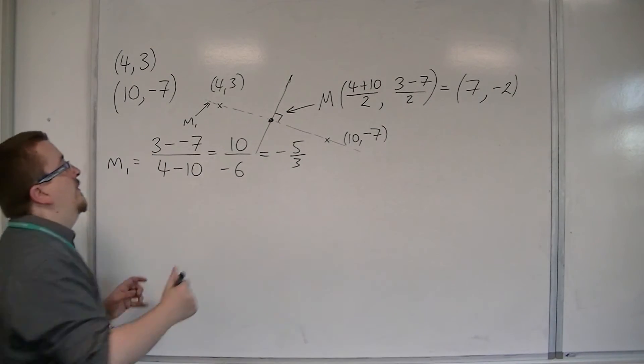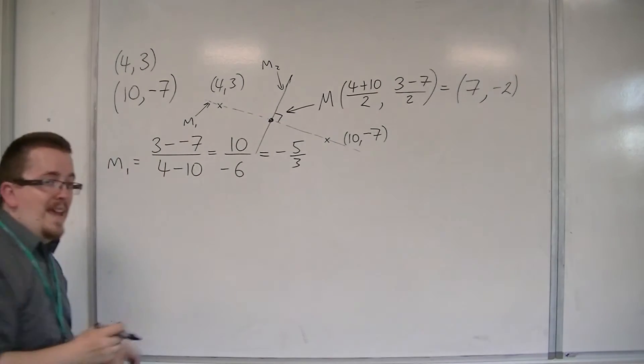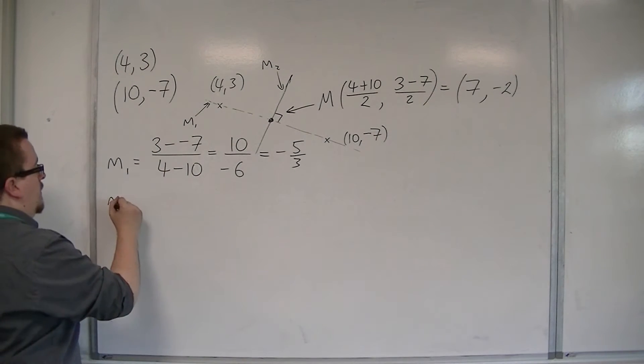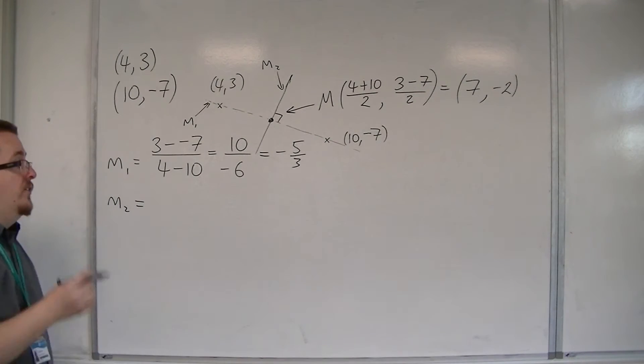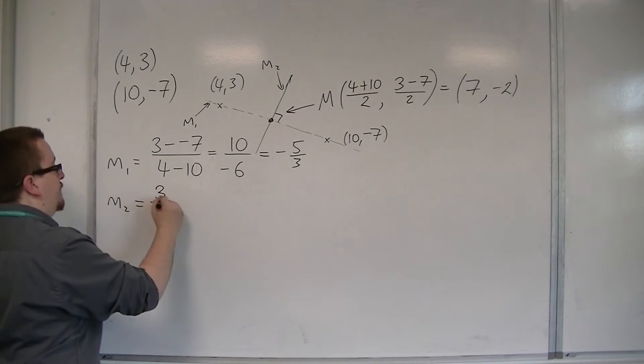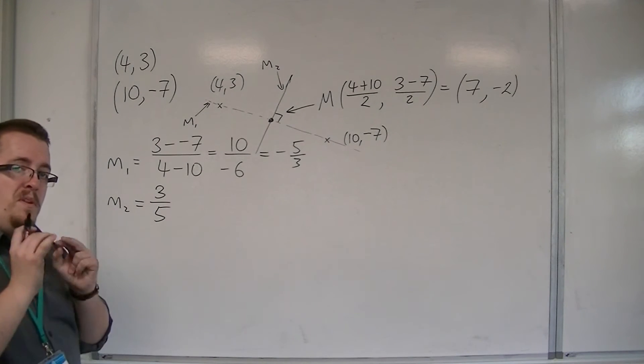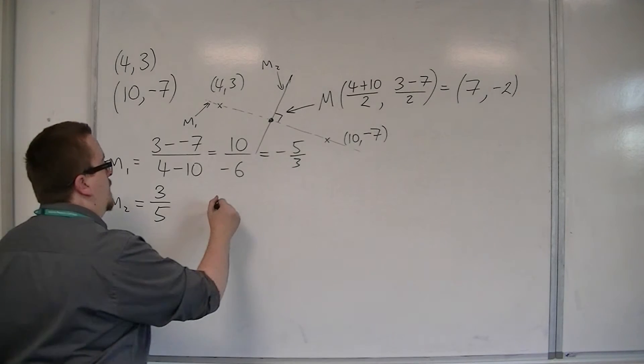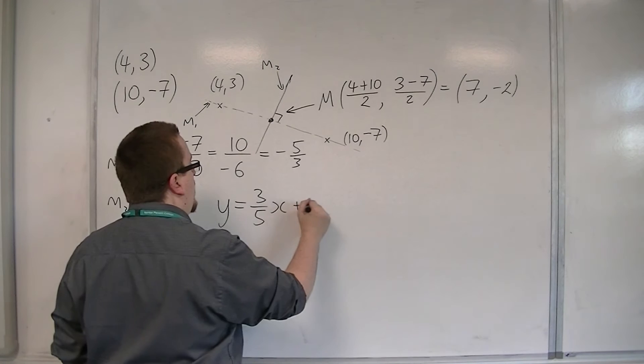That means that the perpendicular line, which we will say has gradient M2, must be the negative reciprocal of minus 5 thirds, so 3 fifths. The equation of the perpendicular bisector must be y is equal to 3 fifths x, plus c.